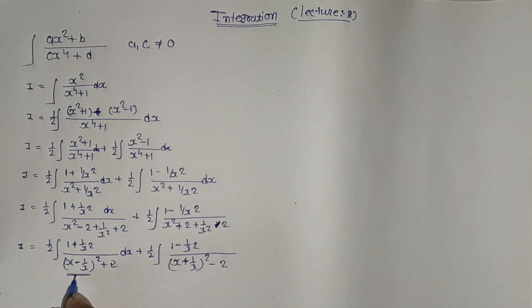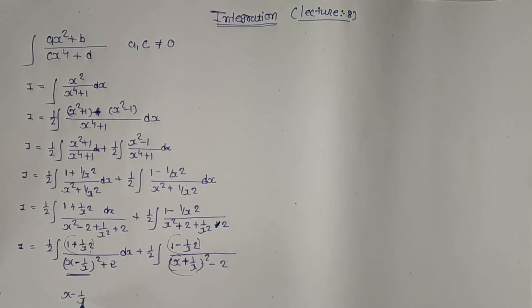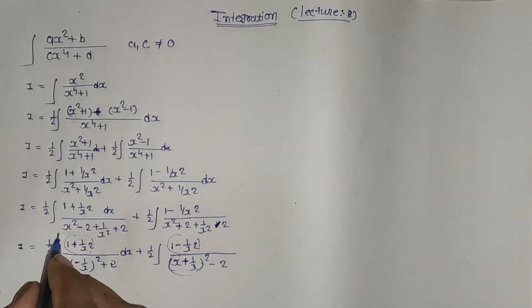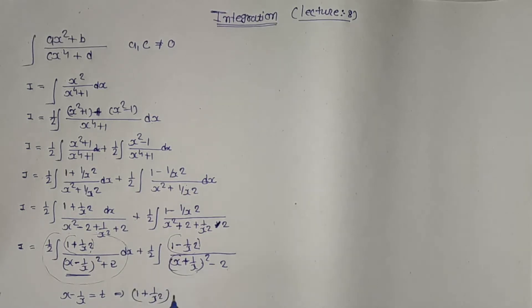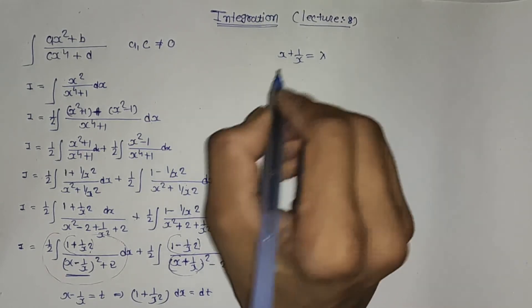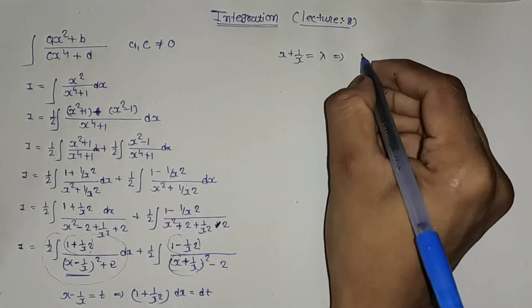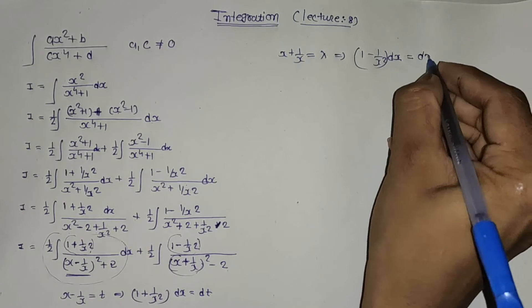The derivative of (x - 1/x) equals exactly (1 + 1/x²), and the derivative of (x + 1/x) equals exactly (1 - 1/x²). So take x - 1/x = t for the first integral, giving (1 + 1/x²)dx = dt. For the second integral, take x + 1/x = λ, giving (1 - 1/x²)dx = dλ.